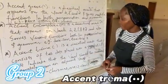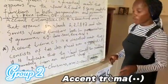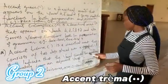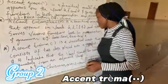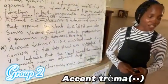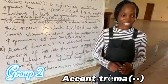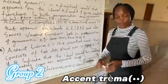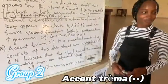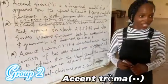Moving on, we have the tréma. The tréma is a diacritical mark that consists of two dots placed over the vowels E, I, and U. It indicates that the vowels should be pronounced separately from the adjacent vowel. Examples of words containing the tréma are Noël, which means Christmas in English, and maïs, which means corn in English. Without the tréma in maïs, you would pronounce mais, which means 'but' in English.